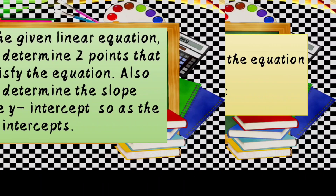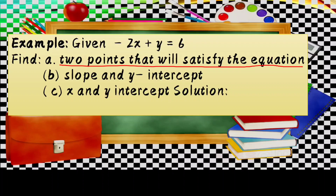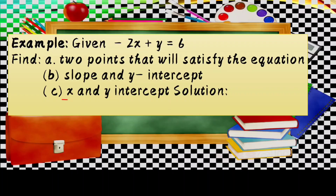Let us try this example: negative 2x plus y equals 6. First, we will find the two points that will satisfy the equation. Second, the slope and the y-intercept. And third, the x and y-intercept solution.